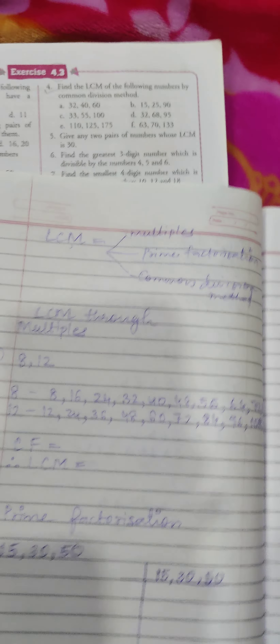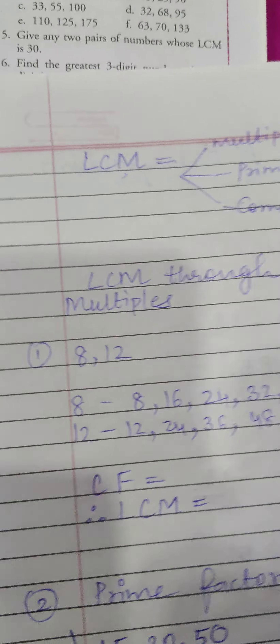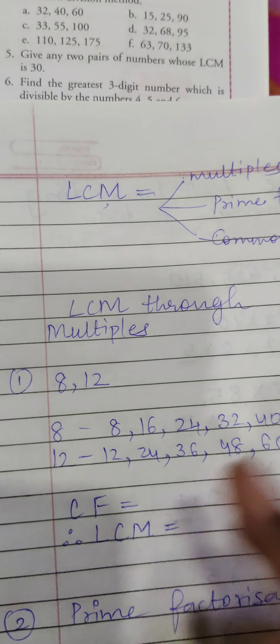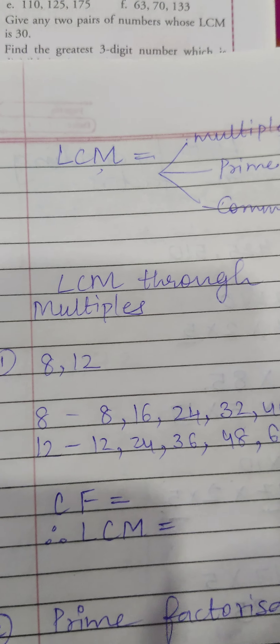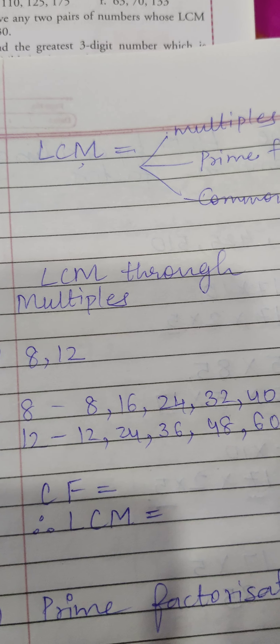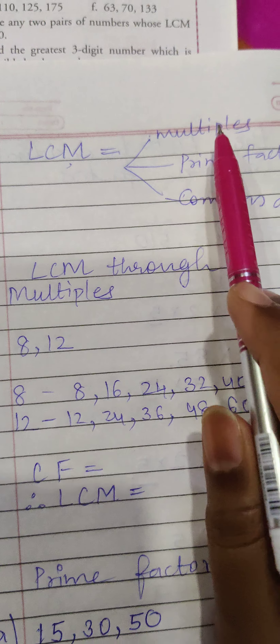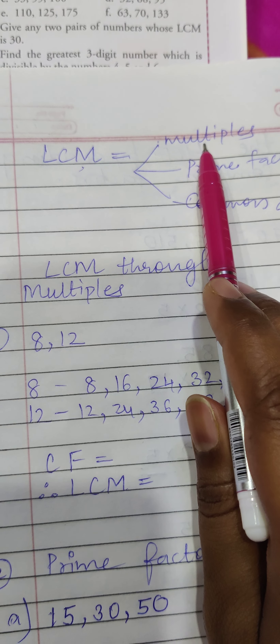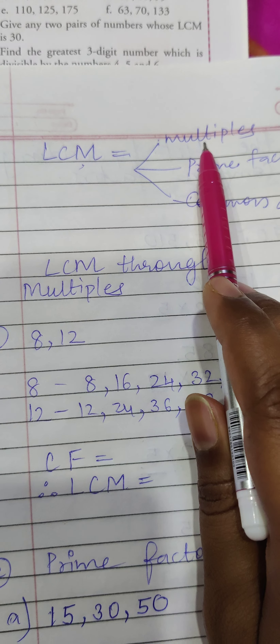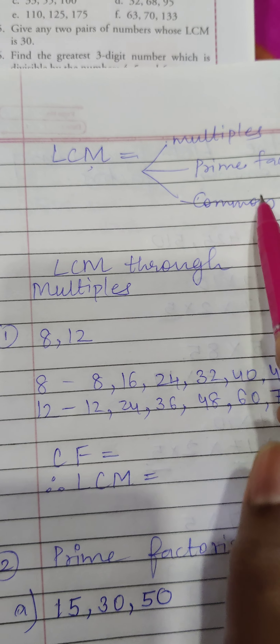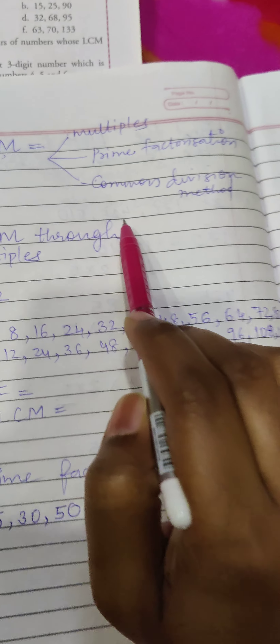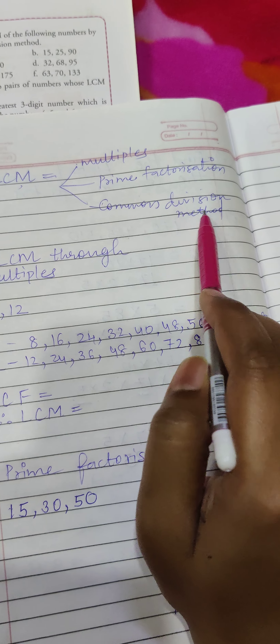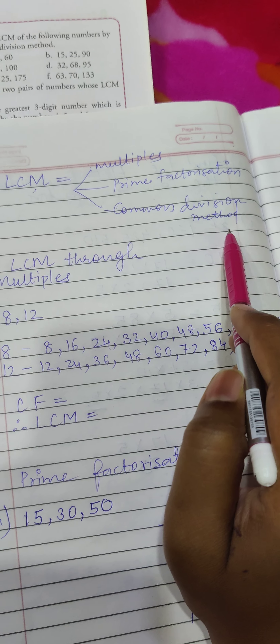Let's do the LCM — it's very easy. LCM has three methods: through multiples, through prime factorization, and through common division method.